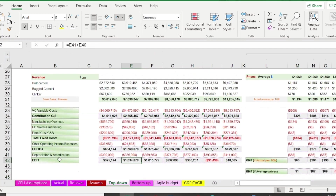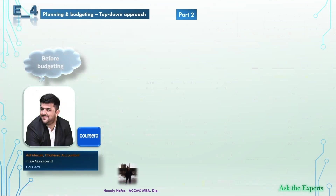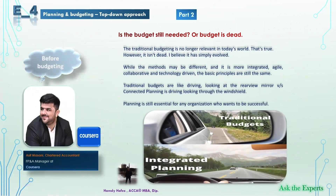Now it's time to ask the experts. After discussing the top-down approach of planning and budgeting, the question is: do we still need a budget? We asked Asif Massani: is the budget still needed, or is budget dead? He answered: the traditional budgeting is no longer relevant in today's world — that's true. However, it isn't dead. I believe it has simply evolved. While the methods may be different, and it is more integrated, agile, collaborative, and technology-driven, the basic principles are still the same. Traditional budgets are like driving looking at the rearview mirror, whereas connected planning is driving looking through the windshield.